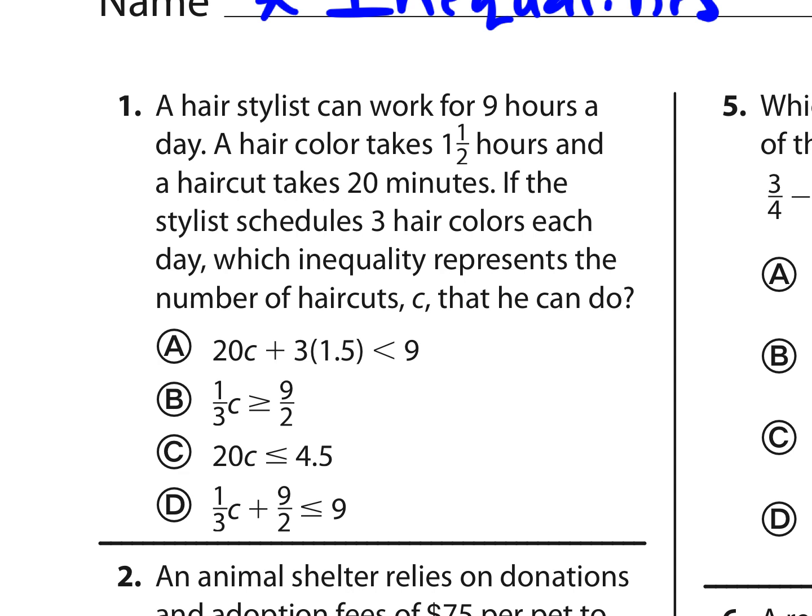First notice that we have some time in hours and some in minutes. So I could convert them all to hours or all to minutes. I'm just going to convert 20 minutes to one-third of an hour. And we know that there's going to be three hair colors that take one and a half hours each. So I could say three times one and a half plus one-third of an hour times C number of haircuts. And we know there's nine hours that the hairstylist is available to work. So this amount of time should be less than nine hours or could be equal to nine hours, but it can't go over.